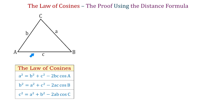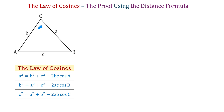In this figure we have a triangle with sides represented by lowercase letters A, B and C. Opposite of side A is angle A, opposite of side B is angle B, and opposite of side C is angle C. So each angle is represented by uppercase letters.